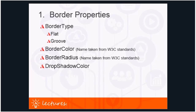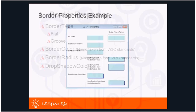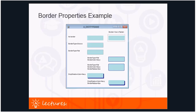Here's a picture to make things clear. On top we have no border. The second one has a border type groove. The third has border type flat, border color navy, and border radius of 6 pixels which gives rounded edges. The fourth one adds a drop shadow color of navy blue — visible here — and with a radius of 6 pixels you also get the rounded edges.